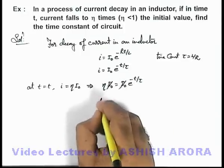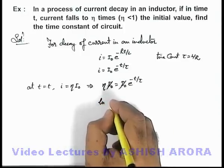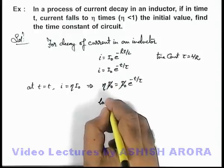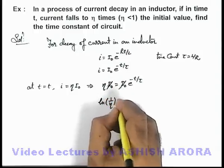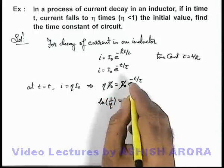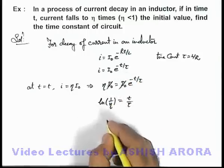Here i₀ gets cancelled out and this will be ln of η, or this can be written as ln of 1 by η equals t by τ, as the power is negative we have taken reciprocal.